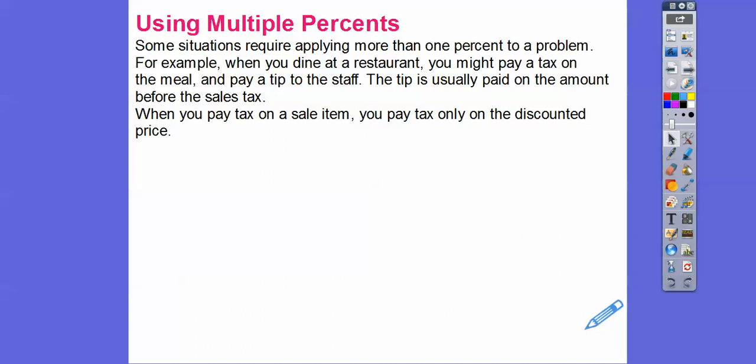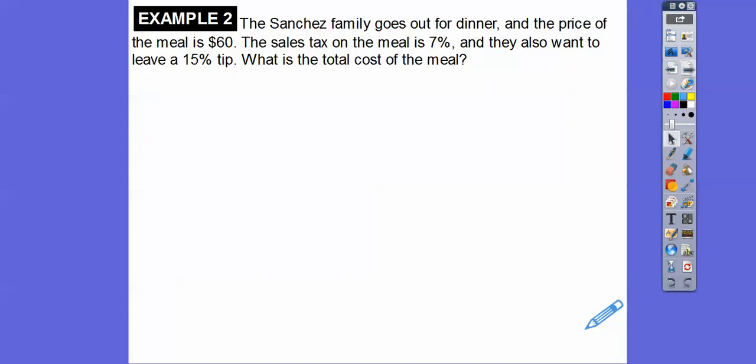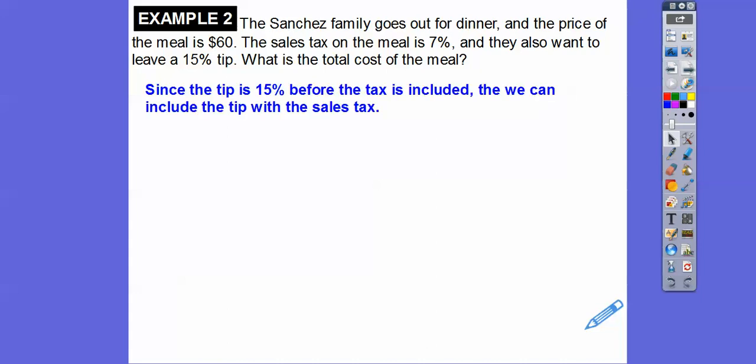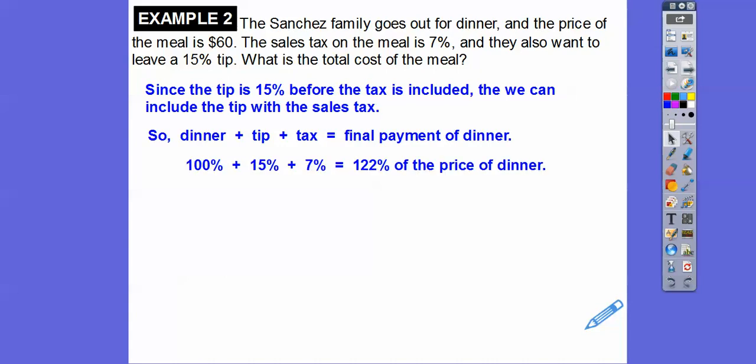All right, so the Sanchez family goes out for dinner, and the price of the meal is $60. The sales tax on the meal is 7%, and they also want to leave a 15% tip. So what is the total cost of the meal? Since the tip is 15% before the tax is included, we can just include the tip money with the sales tax. So we're just going to add 15% with the 7%, and don't forget the dinner is 100%. So 100% of the dinner plus the 15% for the tip plus the 7% for the tax, we get 122% on the price of the dinner. So find 122% of 60. So the final cost for everything should be $73.20.